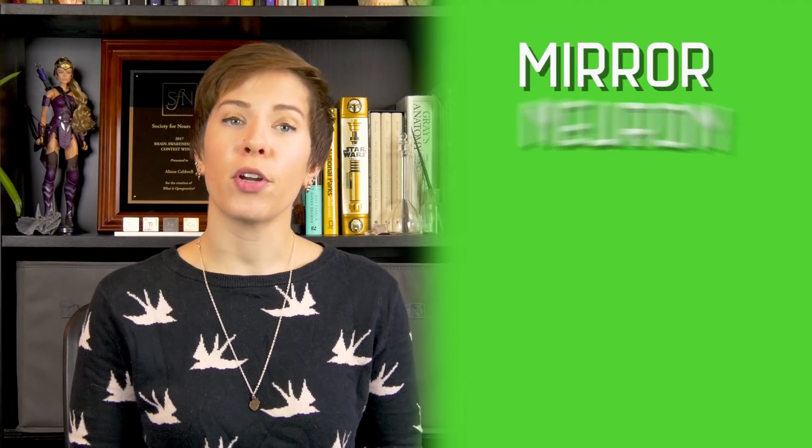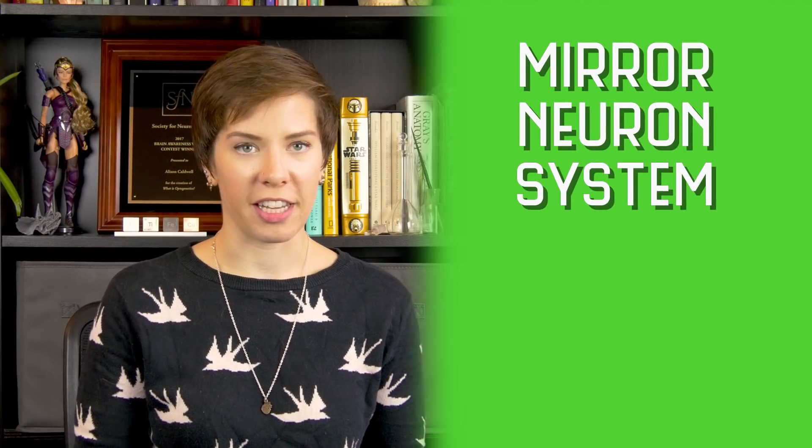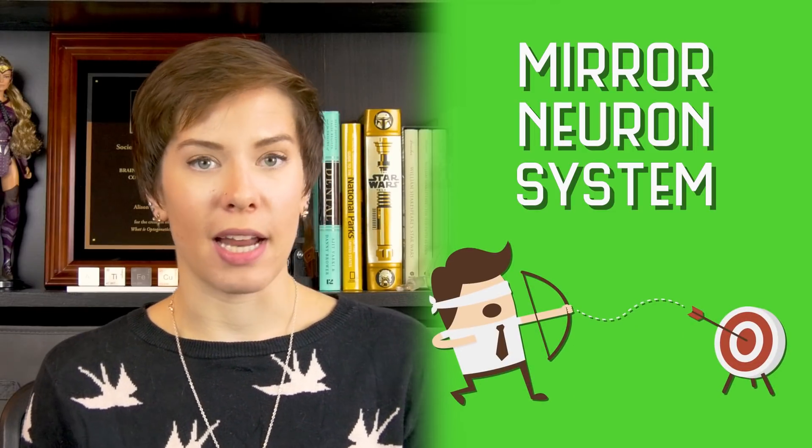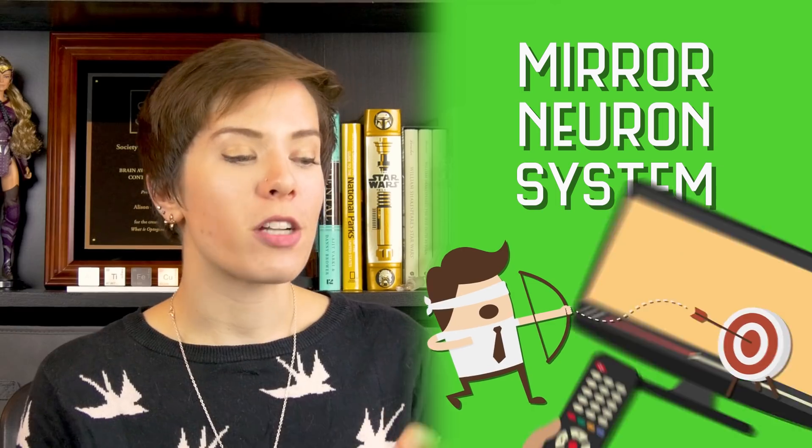Certain brain regions seem to be affected by ASD, too. One of the theories about why autistic people sometimes struggle with social interaction is that their mirror neuron system develops a bit differently. These neurons are unique because they fire when a person performs an action or when they watch another person perform an action. So just watching my facial expressions or watching Cory draw makes your mirror neurons fire.